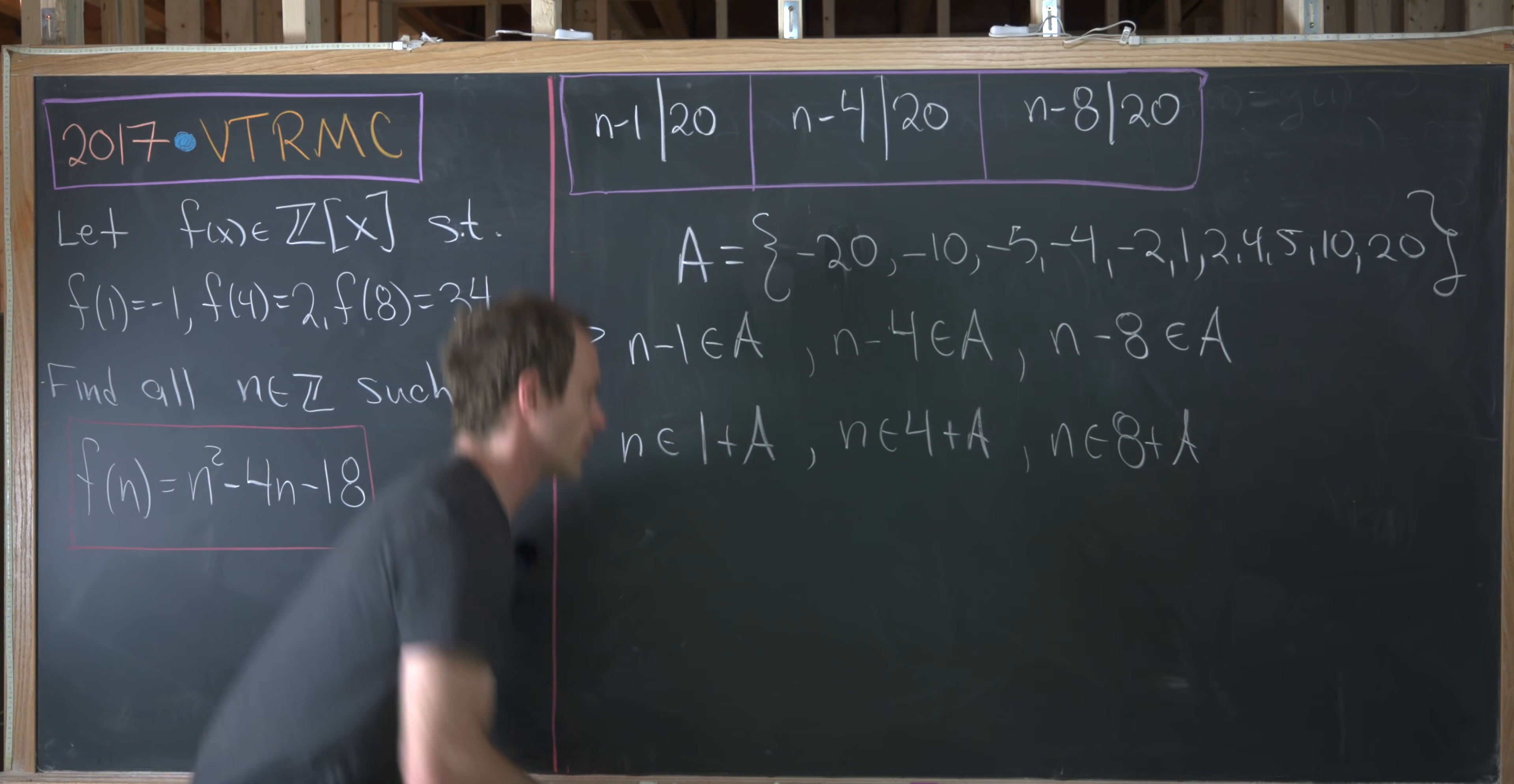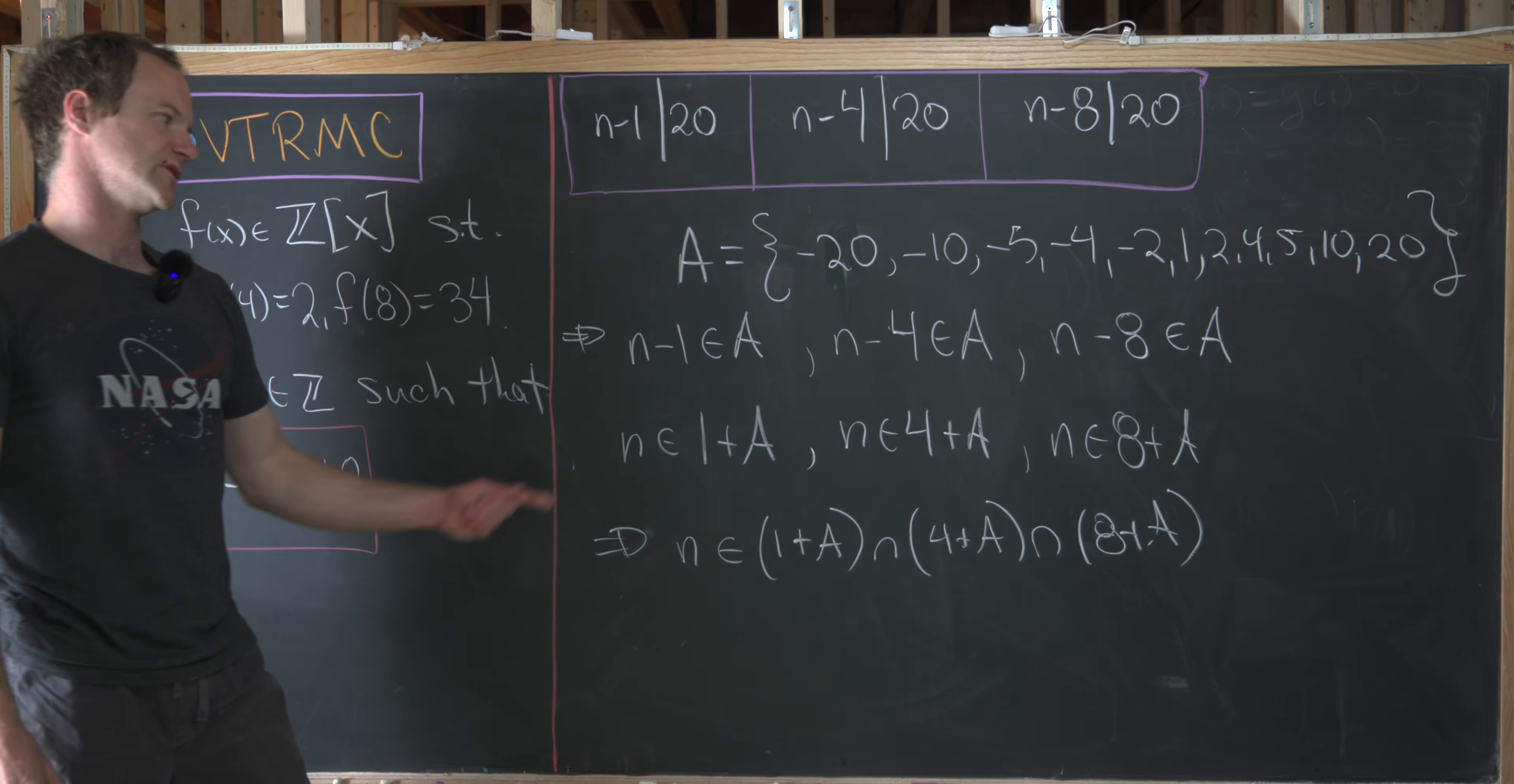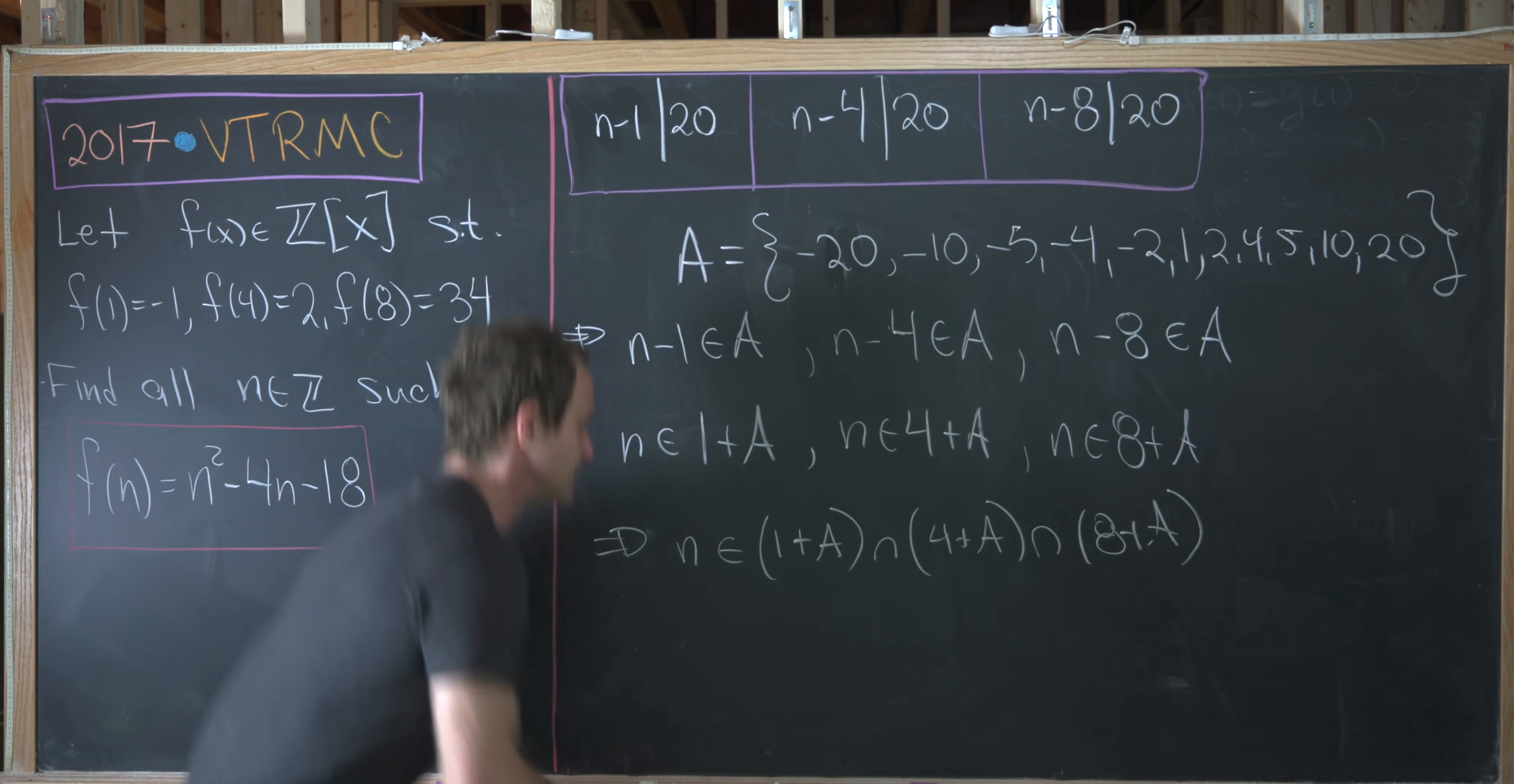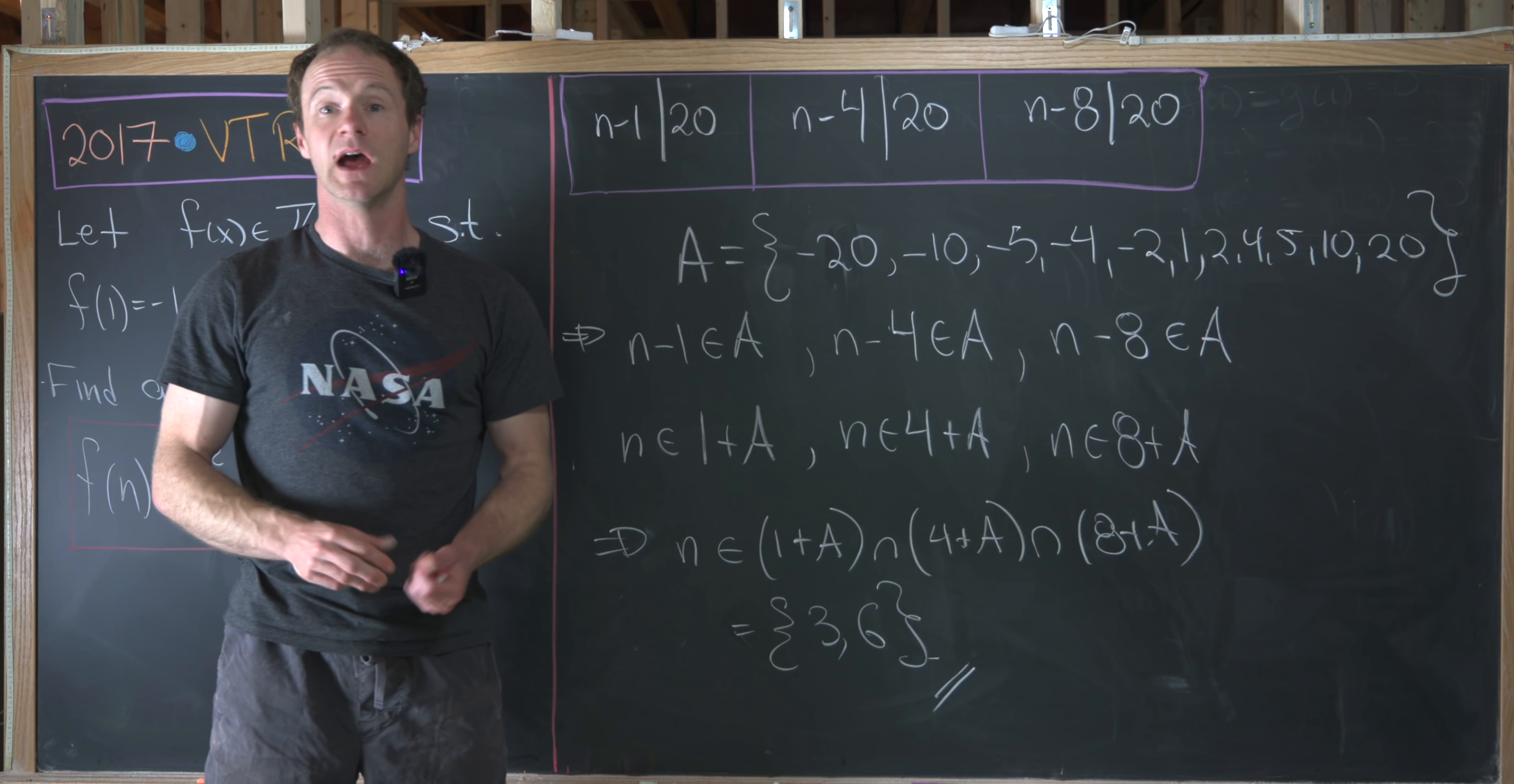But being in all three of those tells us that n is in the intersection of 1 plus A with 4 plus A with 8 plus A. So now you can just write down what are all of those sets. We just take every element of A, we add 1, 4, and 8, and then look at what is in common of all three of those sets. And what you will see is that that intersection only contains the numbers 3 and 6. So the only values of n that satisfy our condition we built over here are 3 and 6. And that's a good place to stop. Thank you very much.